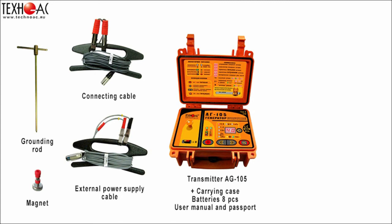An external power supply cable is used for connecting to an external power source, for example a vehicle accumulator — red clamp is positive and black clamp is negative. The set also includes a grounding rod used for creation of return current through the ground, a magnet for connection of the wires to metal pipes, a carrying case, and 8 batteries.